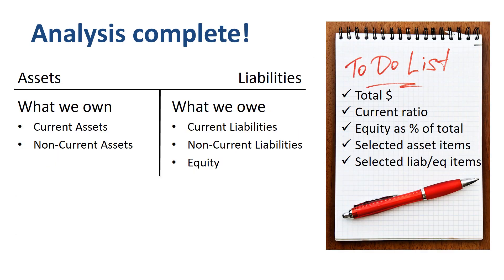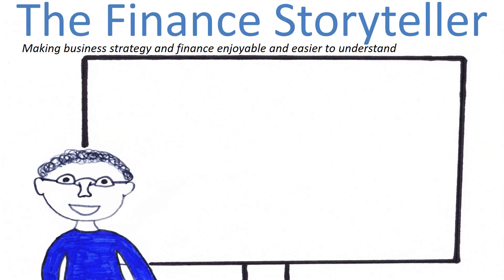We have succeeded in performing a high-level balance sheet analysis of Alphabet Inc, by focusing on five areas: balance sheet totals, current ratio, equity as a percentage of the total, and selected items in assets and liabilities. Thank you for watching! If you enjoyed this explanation of how to read a balance sheet and how to perform a balance sheet analysis, please give it a thumbs up! Please subscribe to the Finance Storyteller YouTube channel. Thank you!